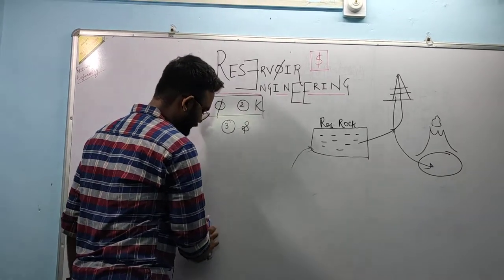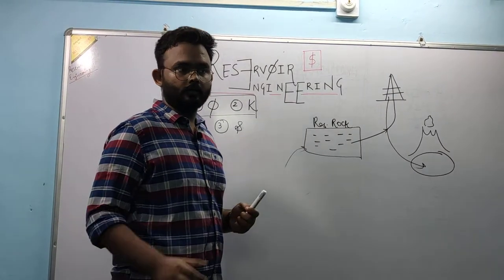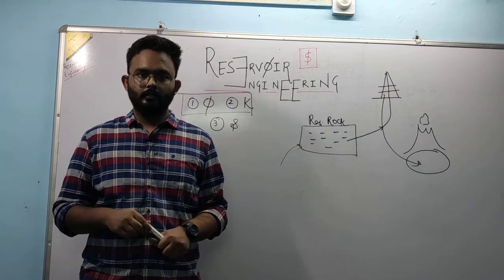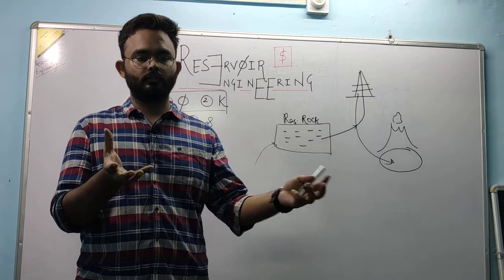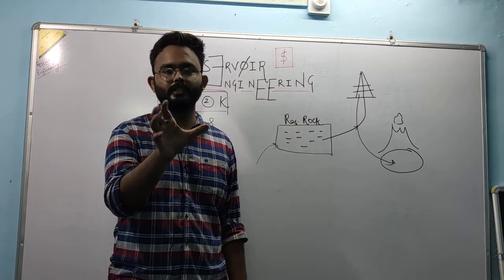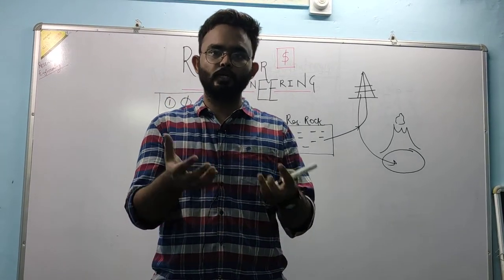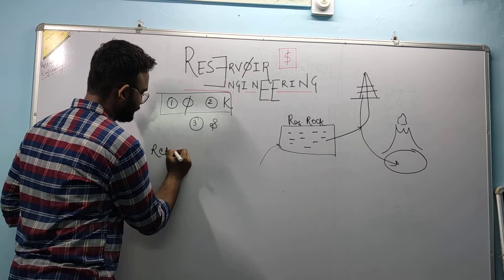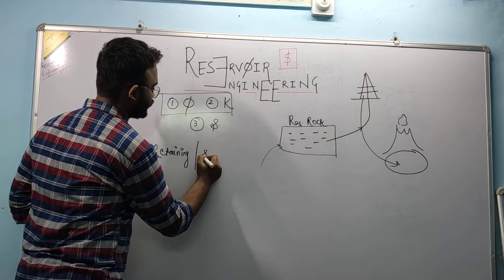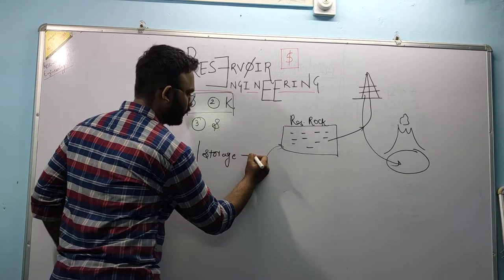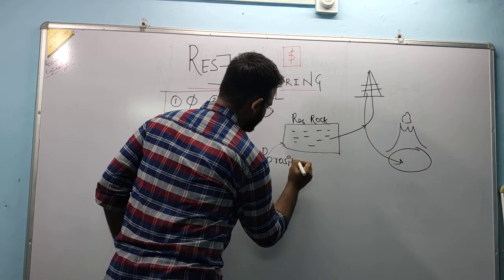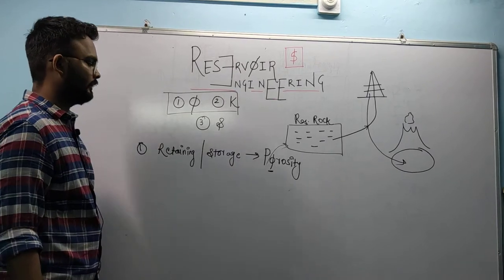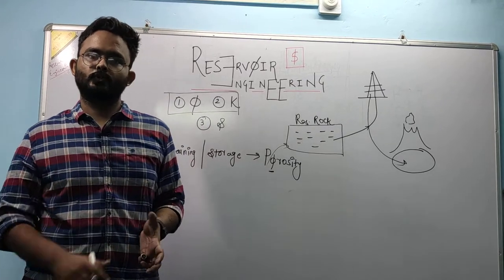Let's take an example. Suppose you get a sponge. You dip the sponge into a bucket of water. Some water gets stored — the sponge gets wet — and some water drips out while some water just stays there. Why does the water stay there? It stays because the sponge has the ability to retain or store some water. That retaining tendency — or storage tendency — is what we call porosity. It is given by the symbol phi. It's the empty space in a substance that allows the storage of fluids.